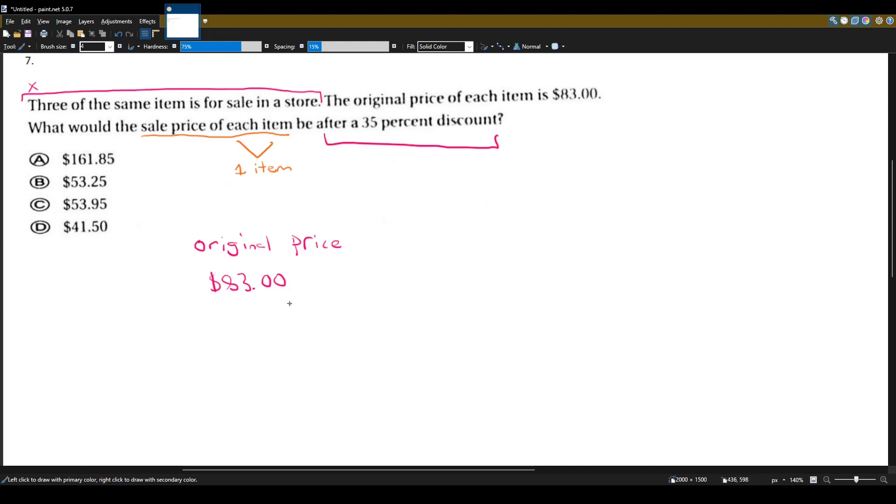So we have $83. I want to know how much would it be after a 35% discount. So how would I calculate that? Well, this is a discount. You want to subtract. So 100% minus the discount percent, which is 35%, this will equal to the sale price.